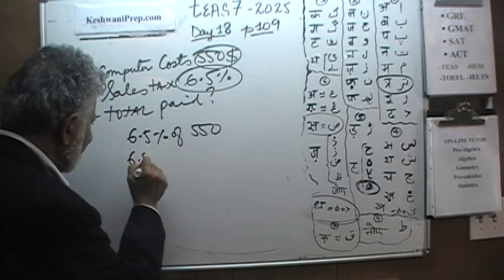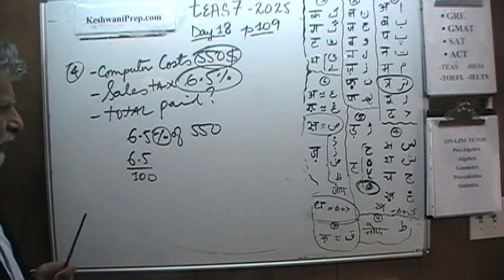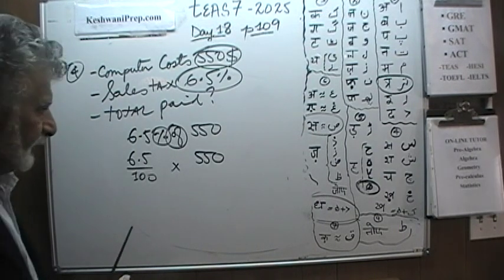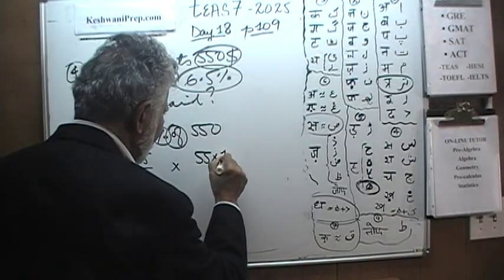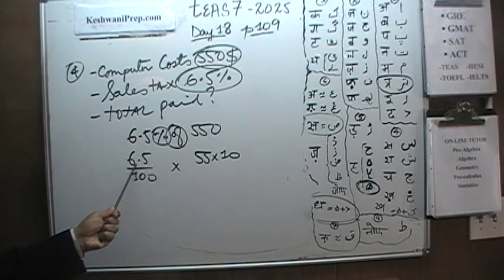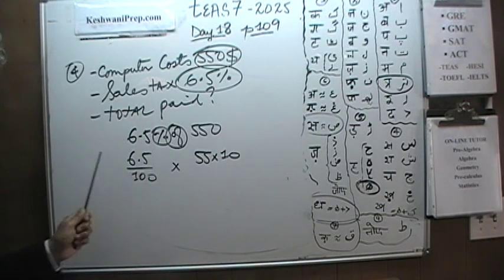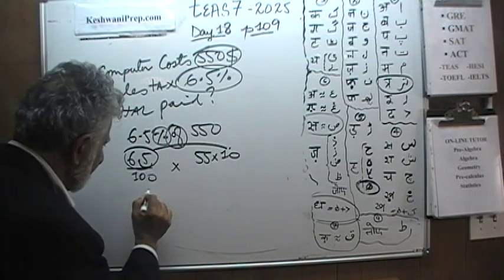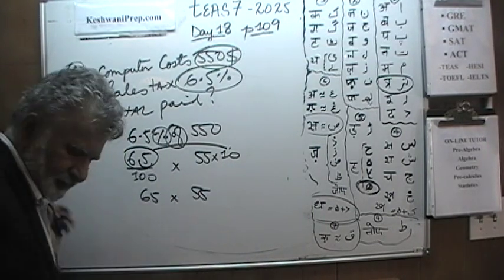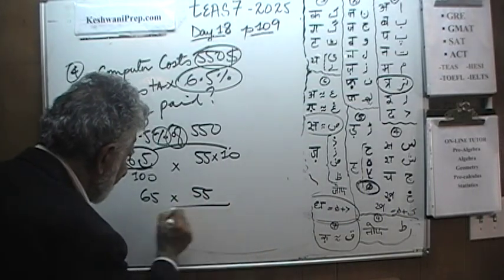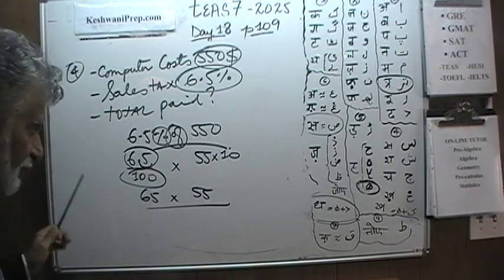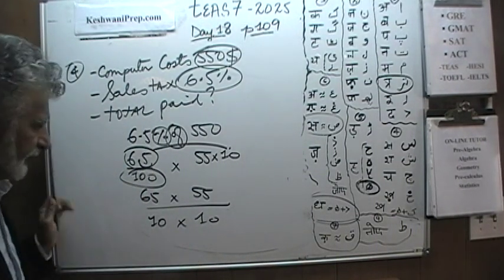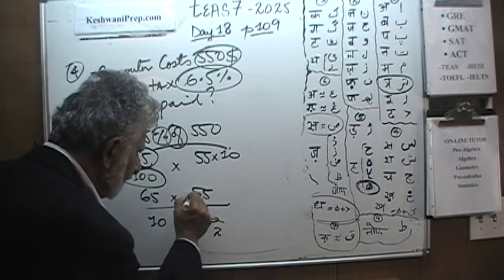Six and a half percent means 6.5 over 100 — that's what percent means, over 100. And 'of' means times 550. So we need 6.5/100 × 550. Instead of writing 550, let's write it as 55 × 10. Now we can use that 10 to eliminate the decimal: 6.5 × 10 moves the decimal one place to the right and becomes 65. So we now have 65 × 55 on top. On the bottom we have 100, which we write as 10 × 10. Then we divide top and bottom by 5: 10 ÷ 5 = 2, and 55 ÷ 5 = 11.